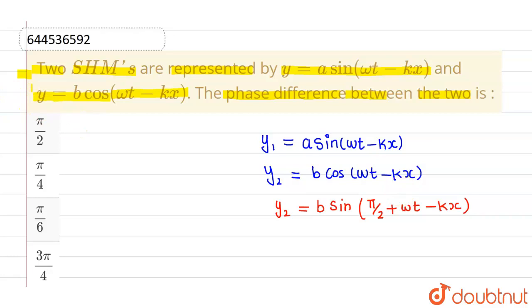Whatever is written inside this trigonometric function is the phase of the equation. So phase of y1 is omega t minus kx, let's say this is phi 1, its phase which is given as omega t minus kx. Similarly, the phase of this y2 is nothing but pi by 2 plus omega t minus kx. So let's say this is phi 2 which is given as omega t minus kx plus pi by 2.